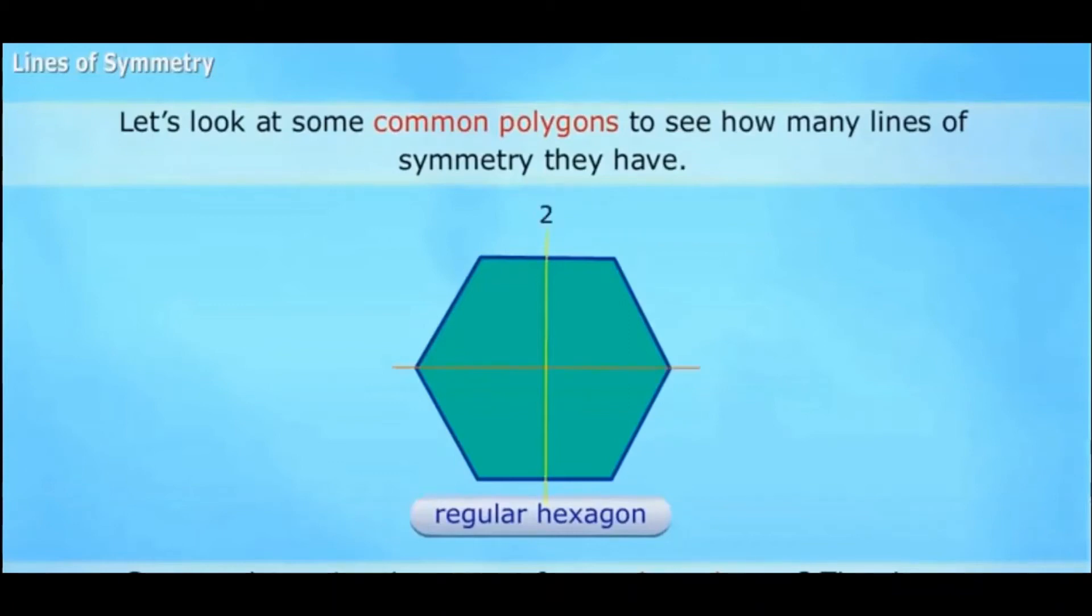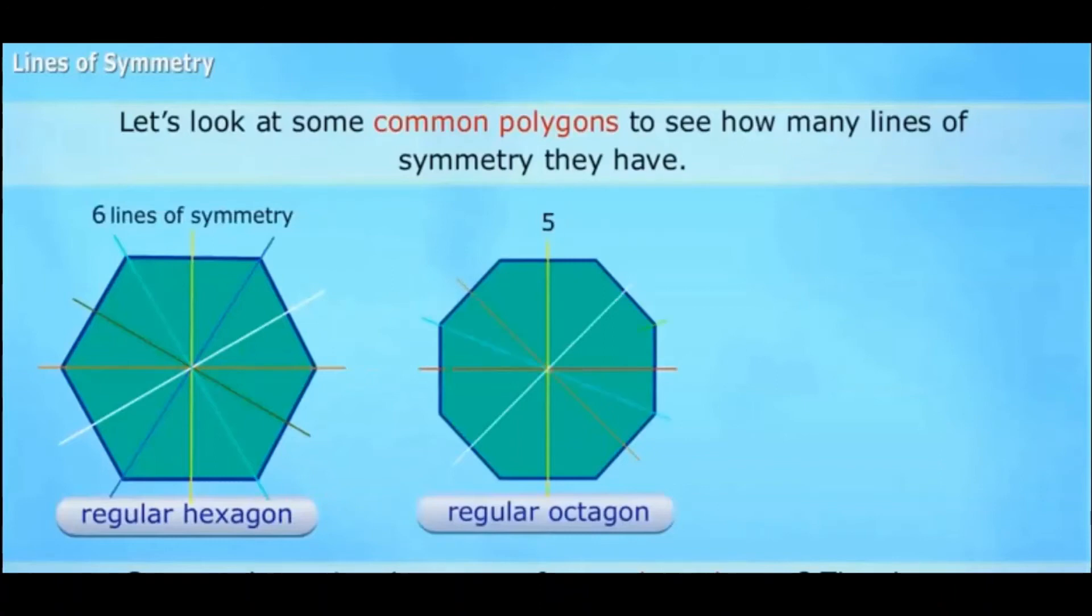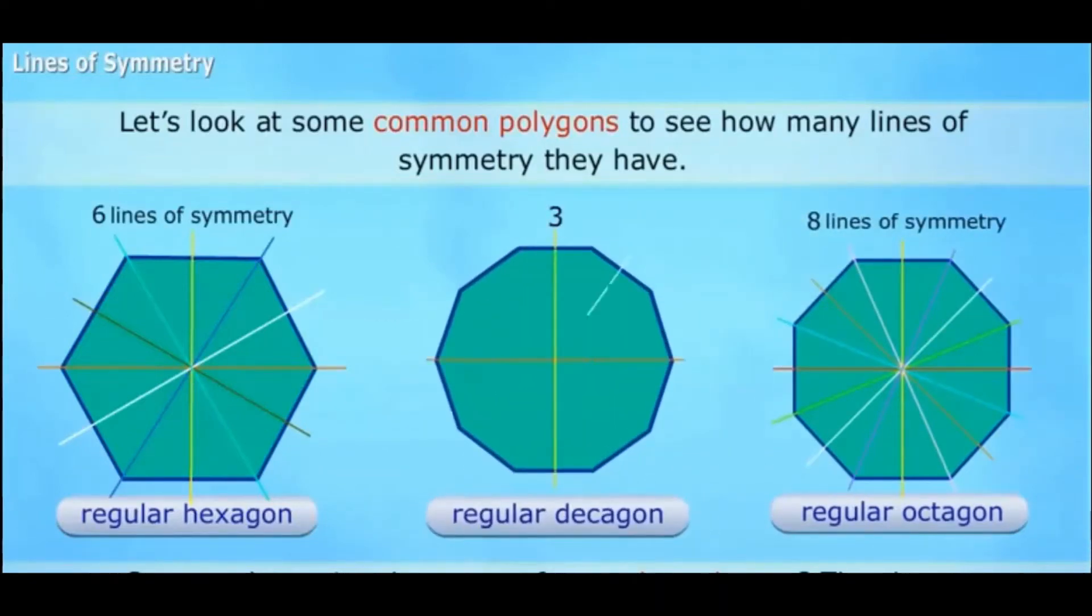A regular hexagon has six lines of symmetry. A regular octagon has eight lines of symmetry. A regular decagon has ten lines of symmetry.